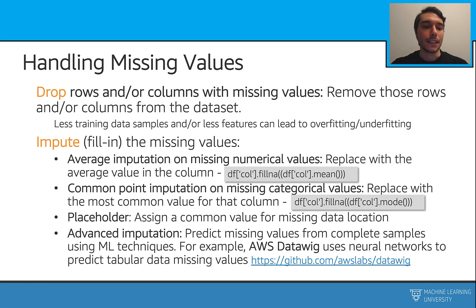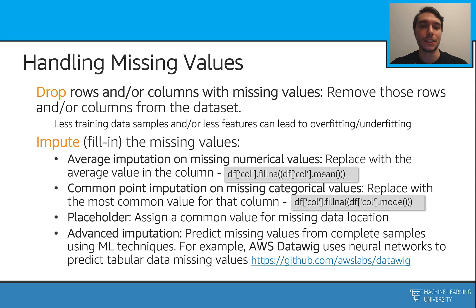The last approach is advanced imputation. In this one, we try to predict the missing values using the complete data. This is very advanced — we actually use a machine learning model to fix this issue. There is the AWS DataWeek tool that does this with some neural networks, and if you want to check it out, you can check the GitHub link for that.